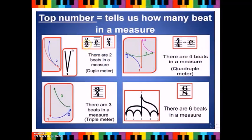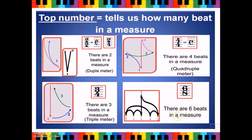As you can see, the time signature has two numbers: the top number and the bottom number. The top number tells us how many beats are in a measure. In 2/2 and 2/4 there are two beats — duple meter: one and two. In 3/4 there are three beats — triple meter: one, two, three. In 4/4 or common time there are four beats — quadruple meter: one, two, three, four. In 6/8 there are six beats — compound triple meter: one, two, three, four, five, six.